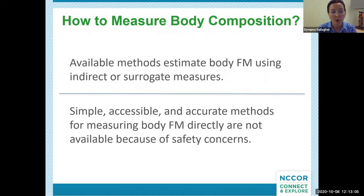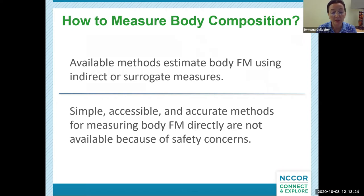How do we measure body composition? Simple, accessible, and accurate methods for measuring body fat mass directly in living individuals are not available because use of such direct measurement methods would harm a person. For these reasons, researchers and practitioners use indirect and surrogate measures to estimate body fat mass in living persons. Indirect measures are based on the premise that established relationships exist between specific body components.